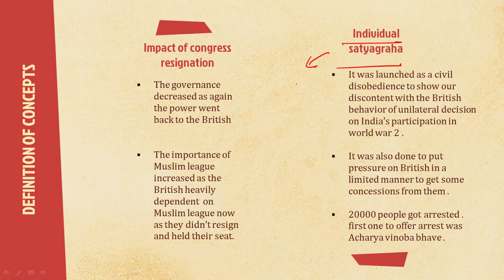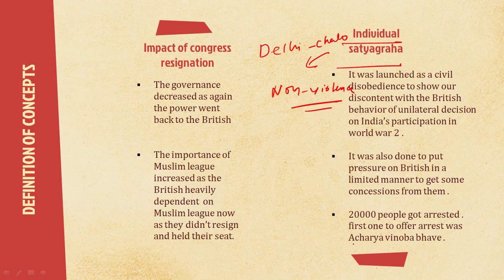In individual Satyagraha, the major concept was non-violence. The purpose was to show that Indians are not weak but we are not launching a mass movement by choice. This is also called the Delhi Chalo Movement, where Satyagrahis would march toward Delhi one by one demanding freedom of speech against the war. The first Satyagrahi selected was Acharya Vinoba Bhave, then Jawaharlal Nehru, then Brahma Dutt. Since it was not a mass movement there was less enthusiasm, but even then almost 20,000 people participated and got arrested.